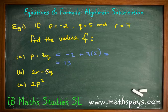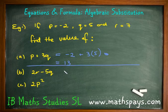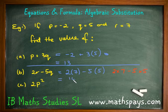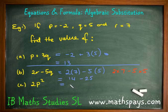The next one: 2R minus 5Q. We've got 2 times the R value of 7, minus 5 times the Q value of 5. If you prefer, you can write this working out as 2 times 7 minus 5 times 5. You can even simplify it: 2 times 7 is 14 and 5 times 5 is 25. That's not necessary if you have a calculator. We can see that the answer is going to be negative 11.